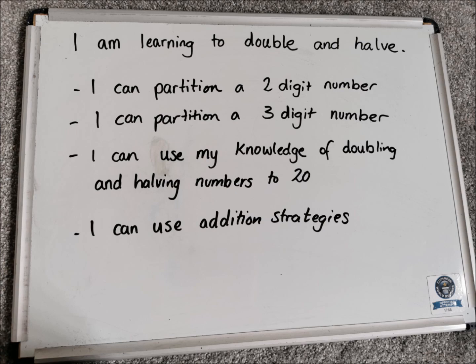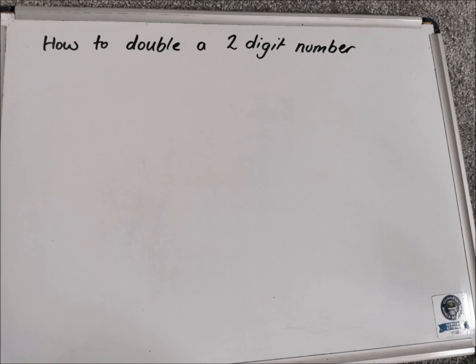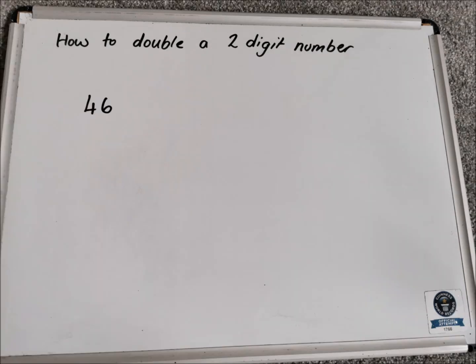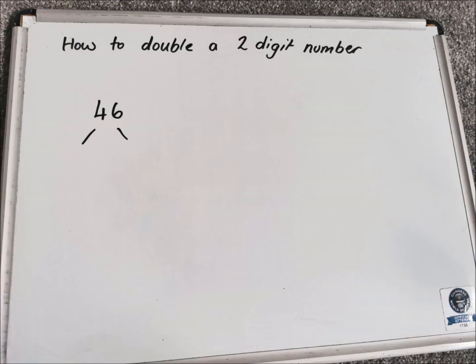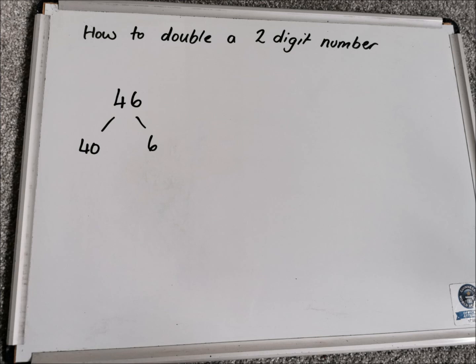Let's have a look at how to double a two-digit number using the partition strategy. Imagine we have 46 as the first example. The first thing we would do is partition this number — what is that 4 and what is that 6? The 4 is a 40 and the 6 is just a 6 because it's in the units column.